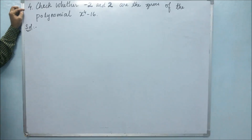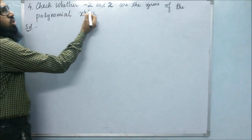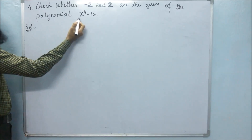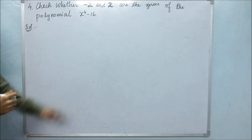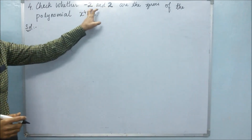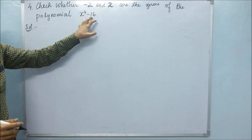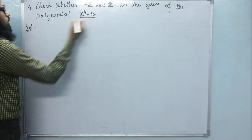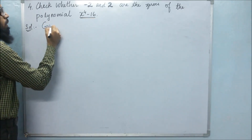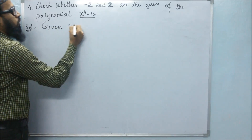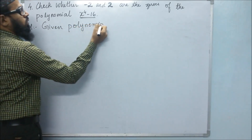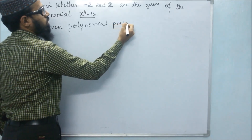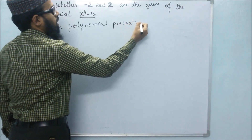In the fourth problem, they have said to check whether minus 2 and 2 are the zeros of the polynomial x to the power of 4 minus 16. So, we have to check whether these values are really zeros of this polynomial. First of all, the given polynomial is P of x equals x to the power of 4 minus 16.